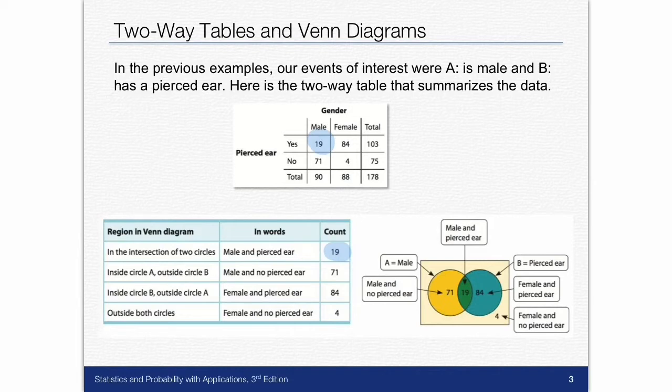Now on event B, pierced ears. We already took 19 of the people who had pierced ears, which was a total of 103. So I took 19 already in the overlap. So what's left when I subtract those 19 is the 84.